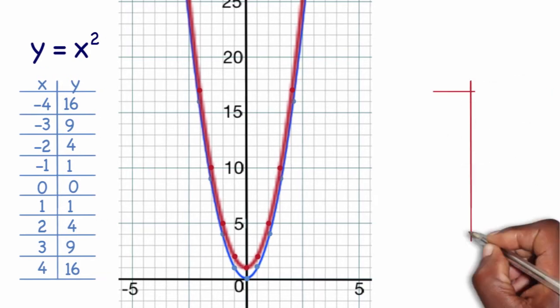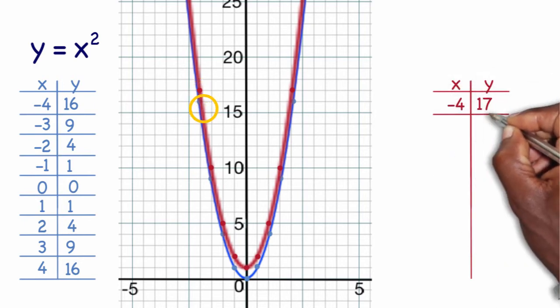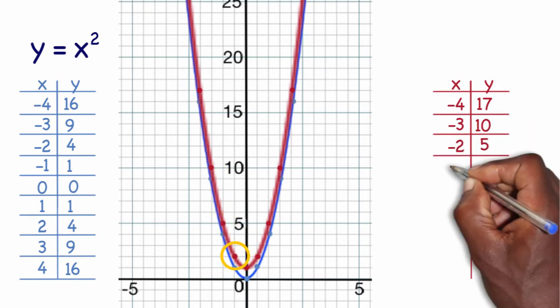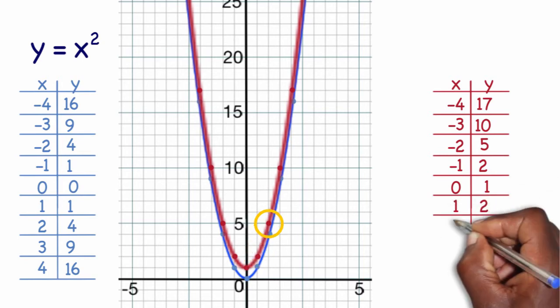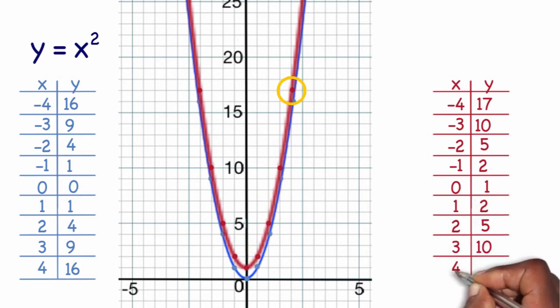So in my table, I already know my coordinates are going to be: negative 4, 17; negative 3, 10; negative 2, 5; negative 1, 2; 0, 1; 1, 2; 2, 5; 3, 10; and 4, 17.